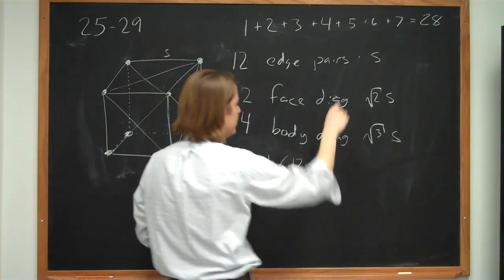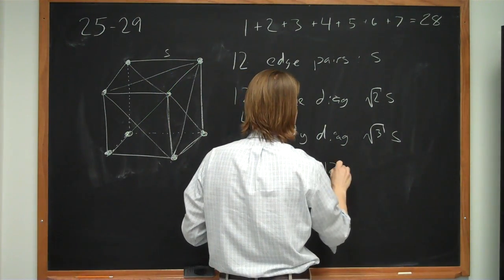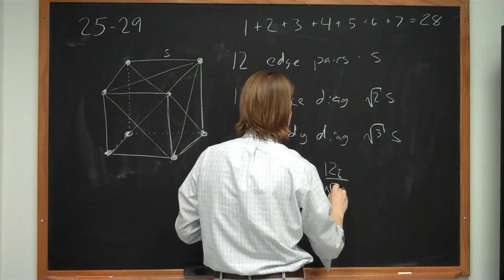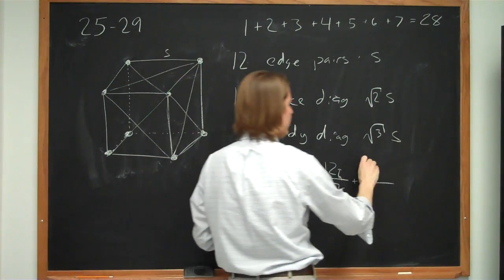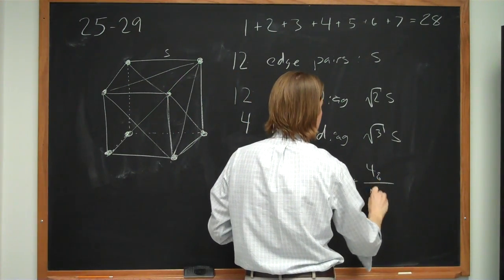And then there's 12 of them at square root of 2s. 12 Q at square root of 2s. And there are 4, 4 Q at square root of 3s.